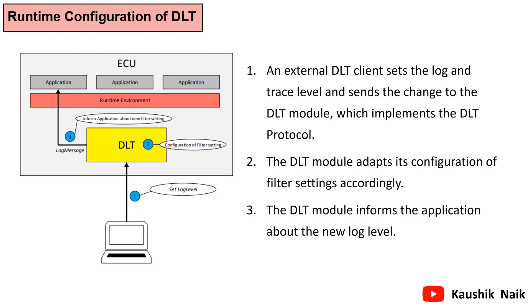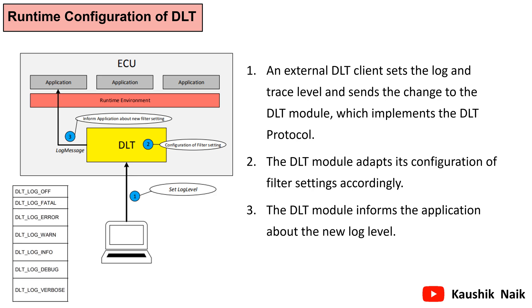During the introduction of DLT, I mentioned there is a provision for configuring filter settings stored in the NVM during runtime. The DLT client sends a set log level to the DLT module. The DLT makes the necessary changes in the configuration of filter settings. After these changes, the DLT module informs the application about the updated log level. These are the different log levels which can be set for any log message. For more information on log levels, you can refer to section 8.8.9 of the Autosar DLT specification document. I have added the link to this document in the description below.